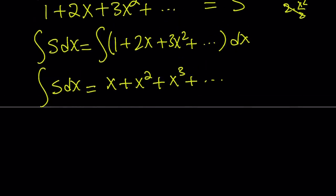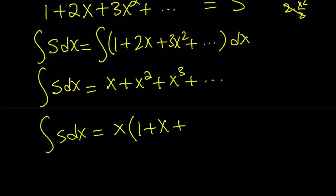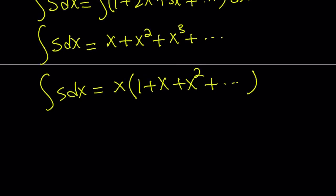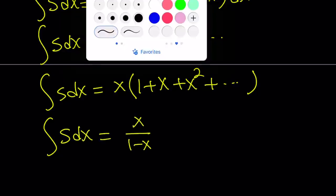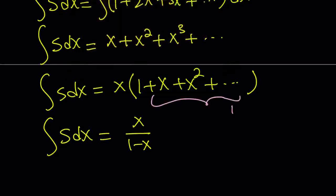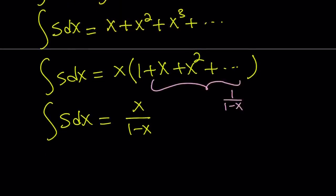We do know what this sum is because we can go ahead and take out an x, and then it becomes a well-known sum. This sum, as long as x is between negative 1 and 1, is going to be equivalent to 1 over 1 minus x. So the integral of S dx is just going to be x over 1 minus x. If you want to add a constant to it, that's fine.